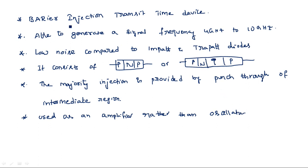BARITT stands for Barrier Injection Transit Time device and it is able to generate a frequency range from 4 GHz to 10 GHz. The main advantages are low noise compared to IMPATT and TRAPATT diodes, and it is mainly used as an amplifier rather than an oscillator.